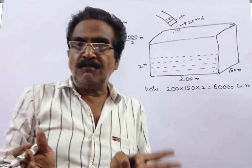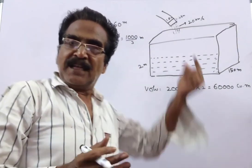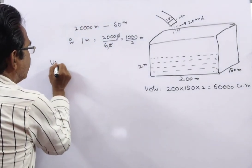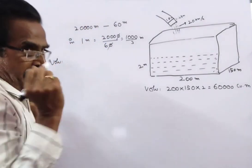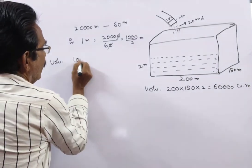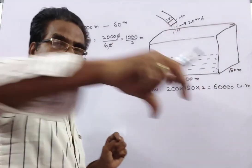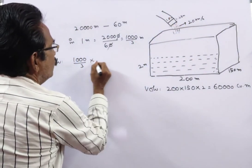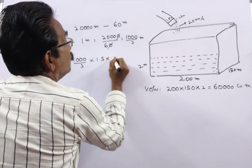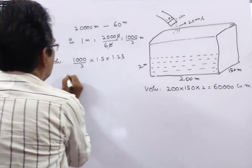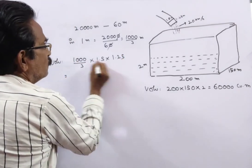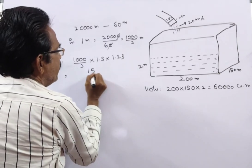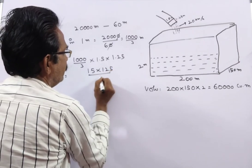Now the volume of the water released by the pipe in 1 minute is equal to the length of water in 1 minute multiplied by the breadth and height of the pipe: (1000/3) × 1.5 × 1.25, which equals 1000 × 1.5 × 1.25 / 3 = 625 cubic meters.